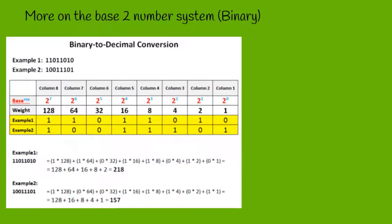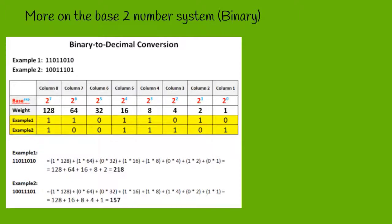For example two, used as the second number in our octet: 128 is on, 64 is off, 32 is off, 16 is on, 8 is on, 4 is on, 2 is off, and 1 is on. So 128 plus 16 plus 8 plus 4 plus 1 equals 157. You could write out these first two octets of your IP address as 218.157.0.0 — that could be your IP address or the start of your network subnet.